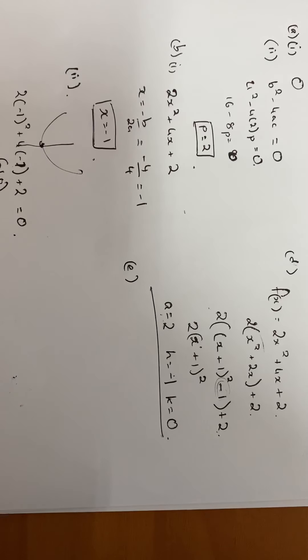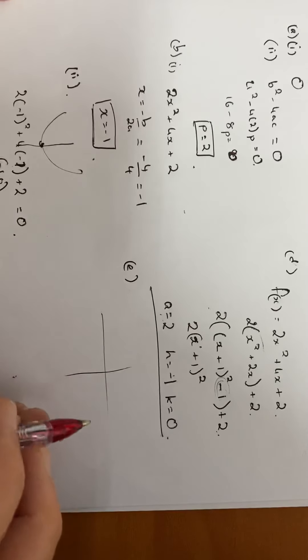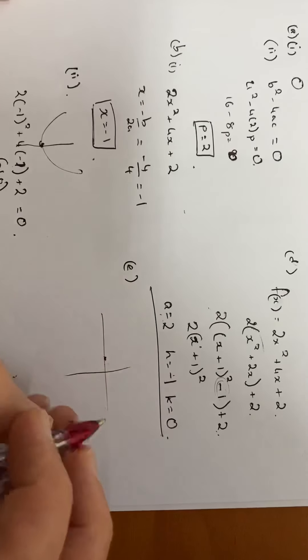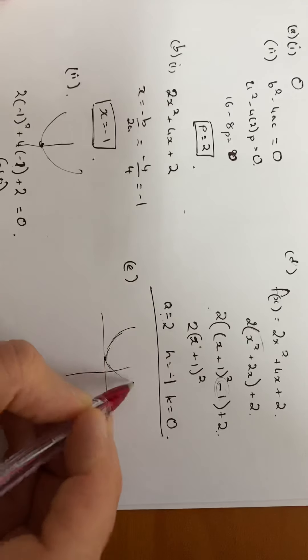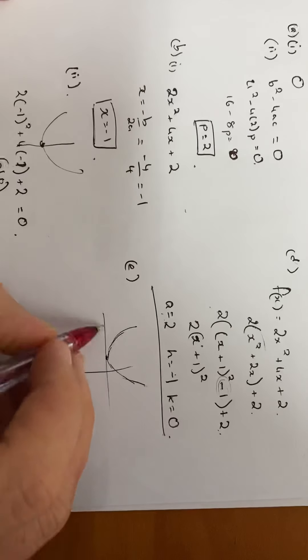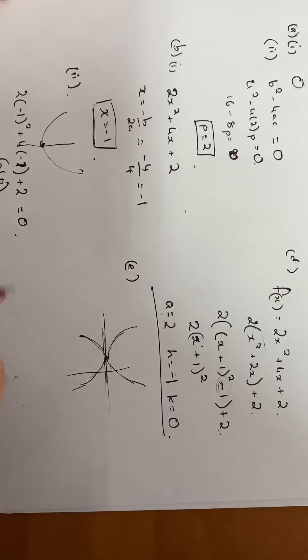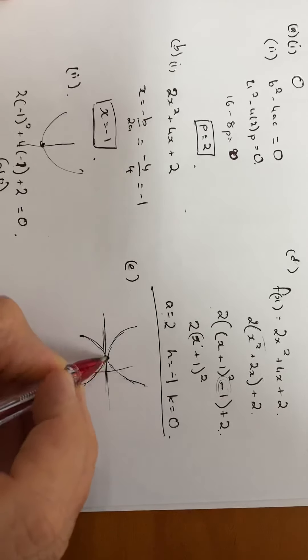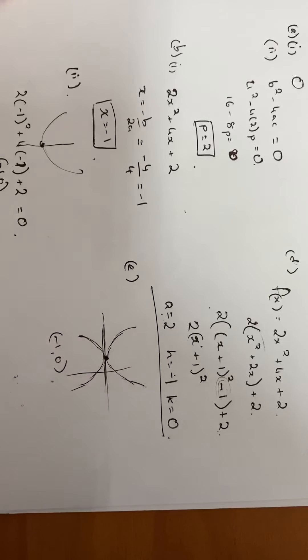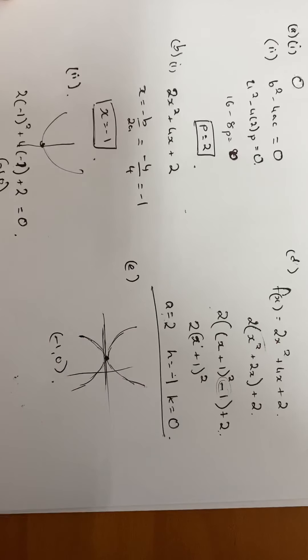Part e, the graph of the function g is obtained by reflection in the x-axis. Find the coordinates of the vertex of the graph of g. It's reflected in the x-axis. We already know that this graph goes through the point minus 1, 0. If it reflects in this axis, it's going to be the perfect reflection, so it's the exact same vertex: minus 1, 0. And that's the solution to the question.